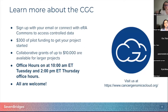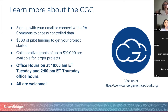For new users attending, you can log in with your email by creating an account, or you can log in with your eRA Commons to access controlled data that you've been previously approved for. Every new user gets $300 of pilot funding to start your project and explore the CGC. A typical analysis can be done with the pilot credits, and some of the analyses we're going to talk about today were done with pilot credits as well.